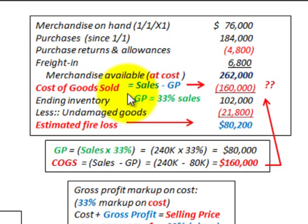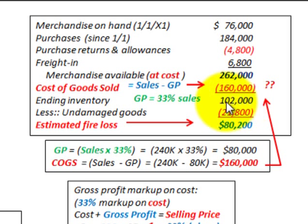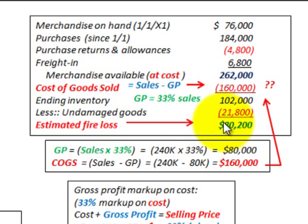We determined cost of goods sold at $160,000 based on gross profit being 33% of sales — no conversion required. From merchandise available of $262,000 less $160,000, we get ending inventory of $102,000. Subtracting undamaged goods of $21,800 gives an estimated fire loss of $80,200.